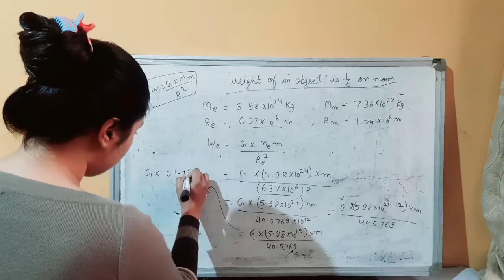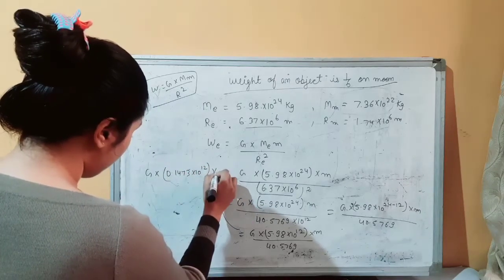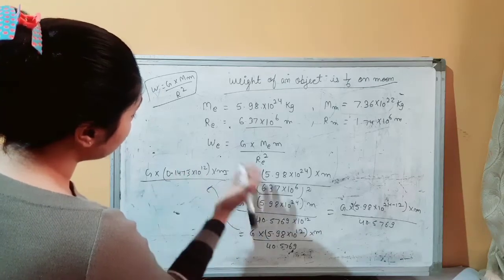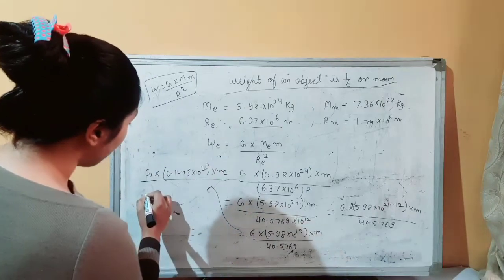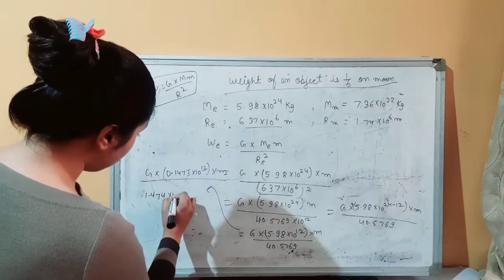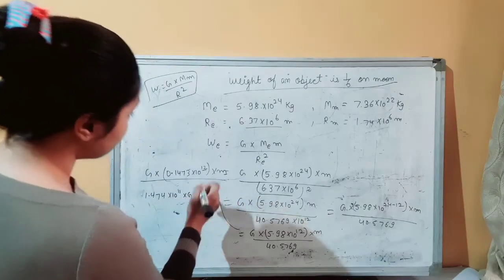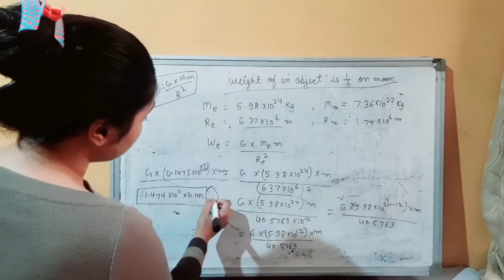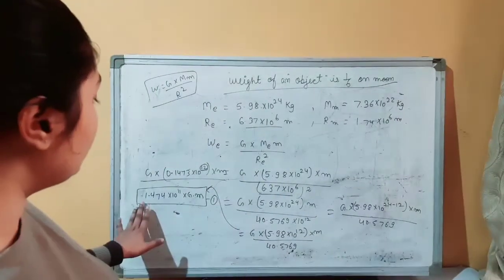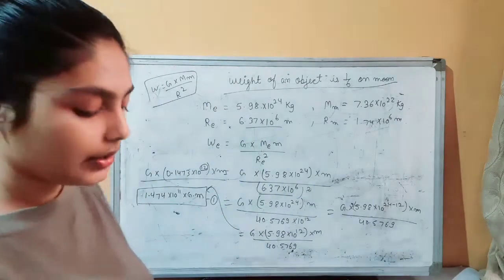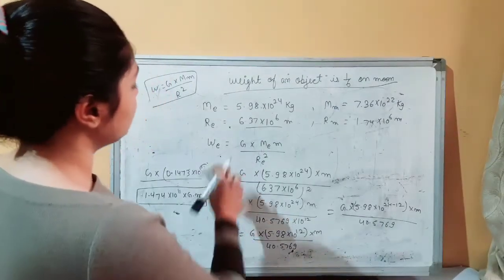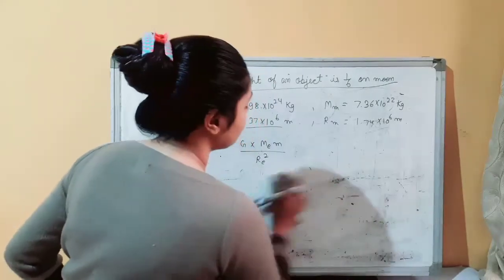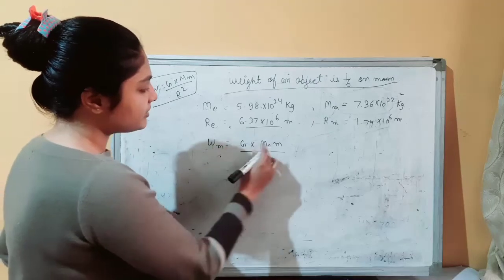We shift the decimal to get a standard form: 0.1473 × 10¹² becomes 1.474 × 10¹¹. So W_Earth = 1.474 × 10¹¹ × G × m — this is Equation 1. Now we apply the same formula for the Moon.